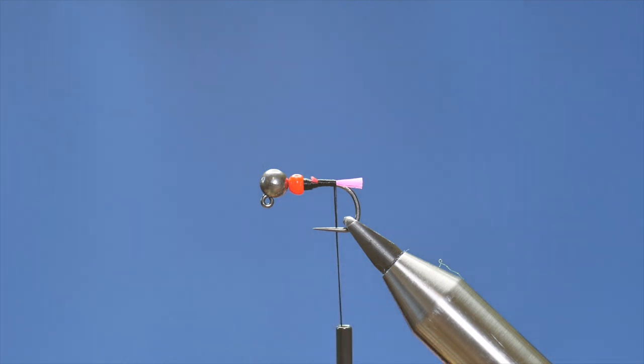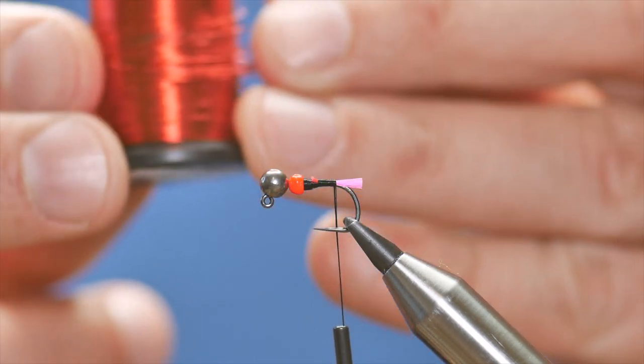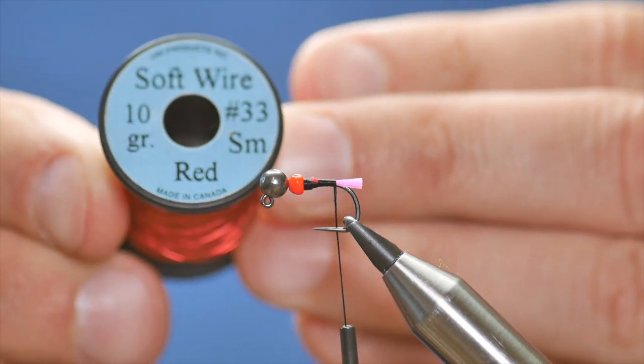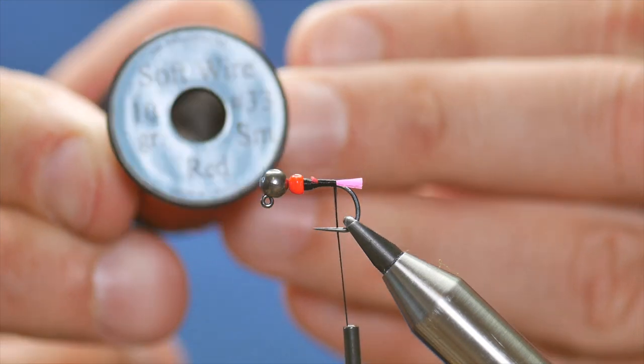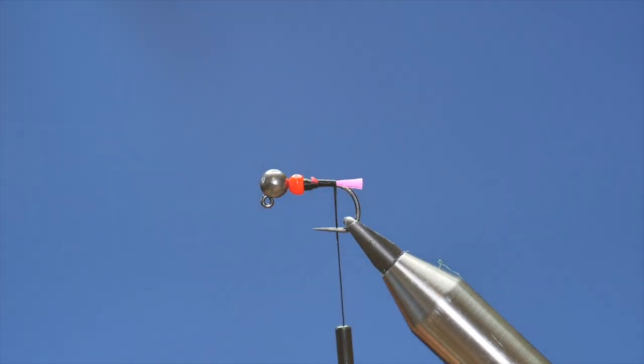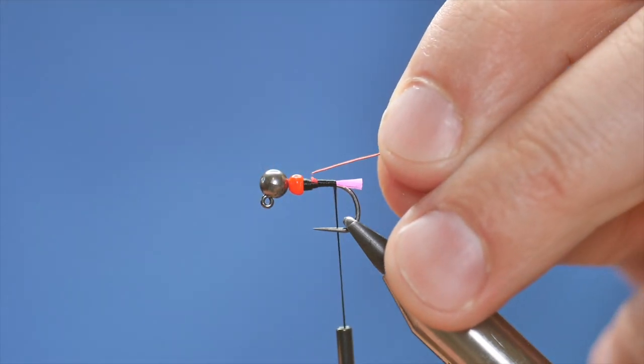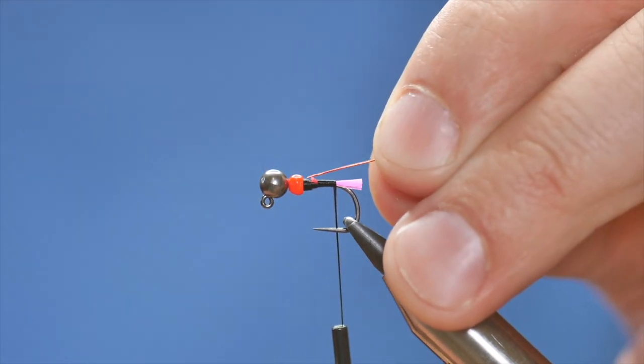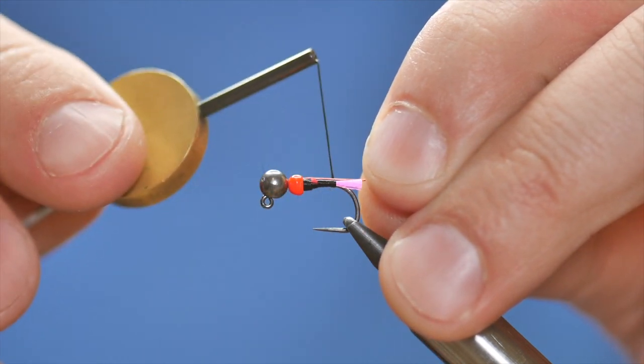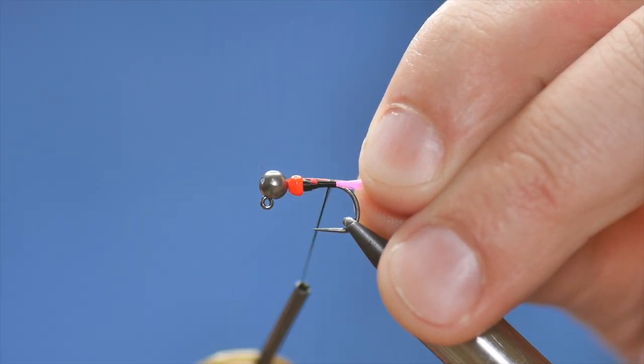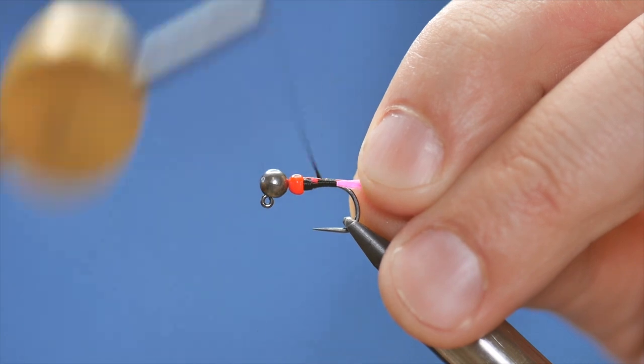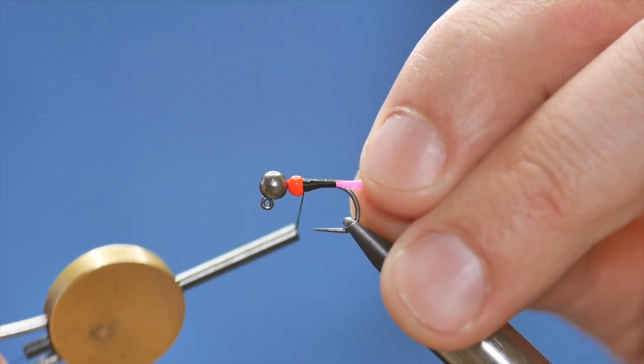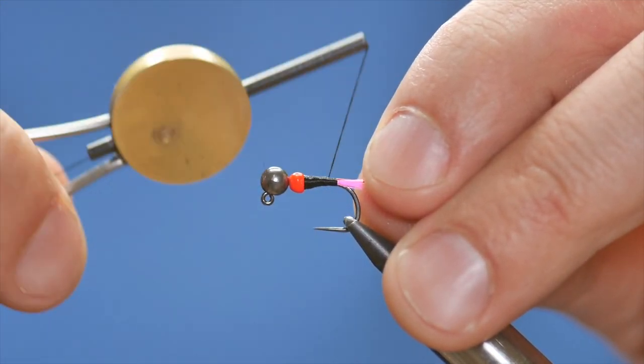For the rib of the body, I'm going to use some of this red soft wire and this is number 33. It's quite a thick wire, which I want for this fly. I'm going to use the point of this and push it up into my countersunk bead. And then, I'm going to secure it in all the way up to the top.